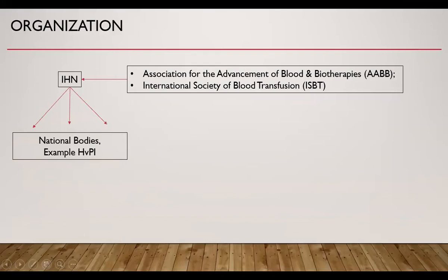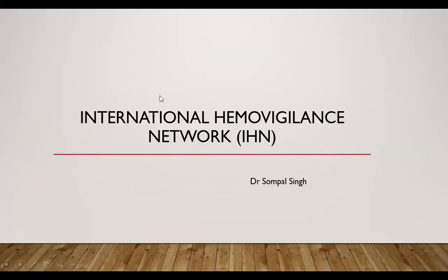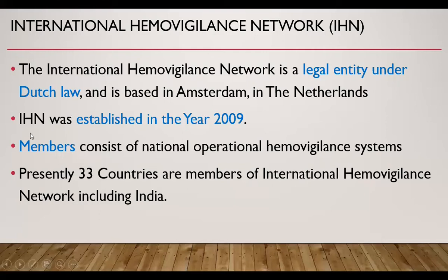This is the organization of Hemovigilance. There is one international body known as the International Hemovigilance Network. It is supported by the Association for the Advancement of Blood and Biotherapies and the International Society of Transfusion. Under this, there are various national bodies which are members of the International Hemovigilance Network. The national body for India is the Hemovigilance Program of India, or HVPI. The International Hemovigilance Network is a legal entity under Dutch law in the Netherlands. It was established in 2009 and its members consist of National Operational Hemovigilance Systems, and at present there are 33 countries as members, including India.